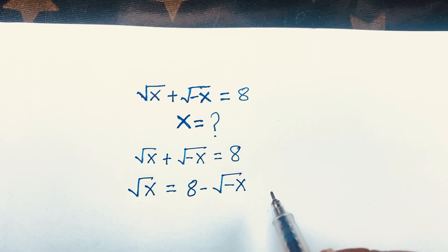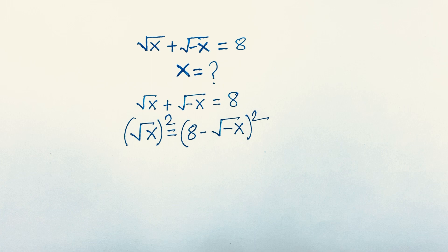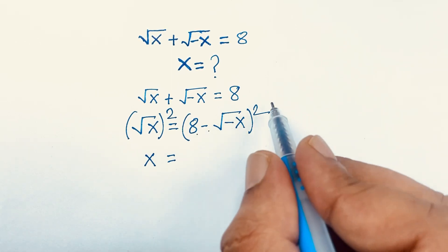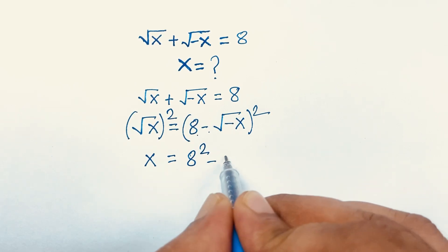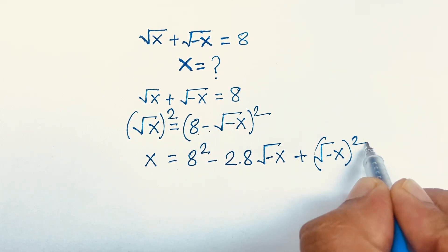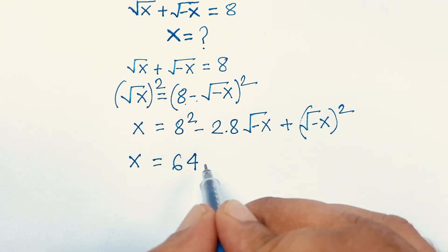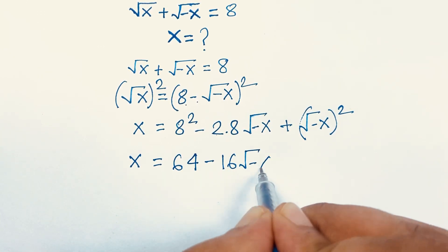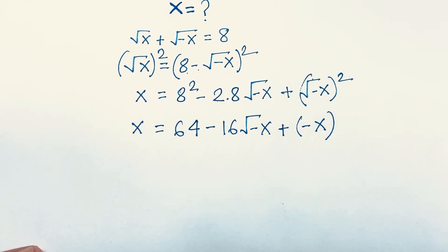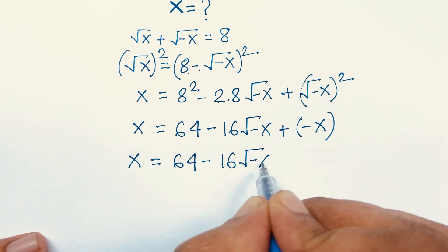Now we square both sides. The square root on the left cancels, giving x. On the right, we apply the identity (a - b)² = a² - 2ab + b², where a = 8 and b = √(-x). This gives x = 64 - 16√(-x) + (-x), since squaring √(-x) gives minus x.